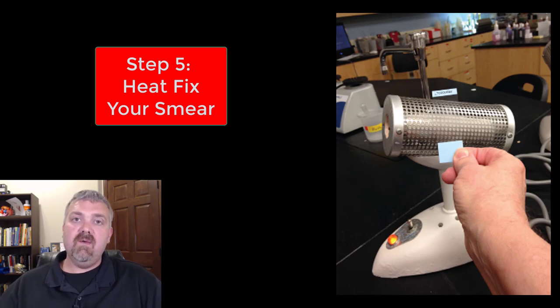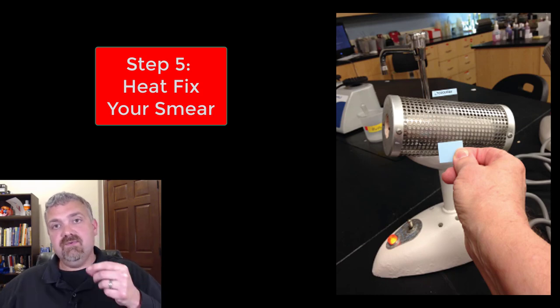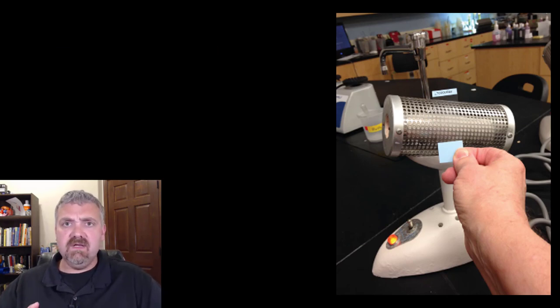We primarily will use the Bunsen burner. When we heat fix slides, how I do it and how you do it will be different. I like to just hold the slide and then gently pass it through the flame of the Bunsen burner until I can feel the slide get warm. I would have a glove on that hand or else it would get super warm.